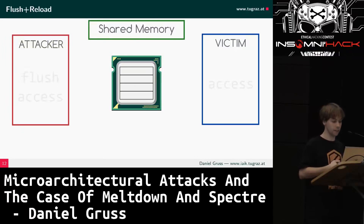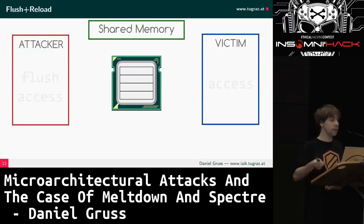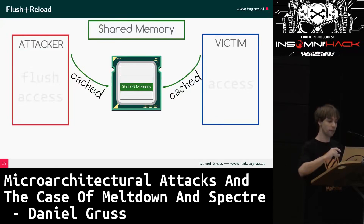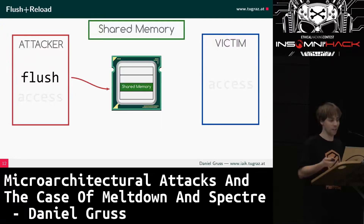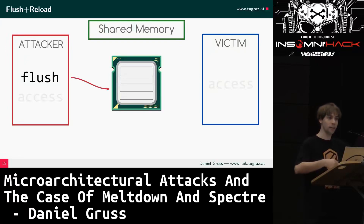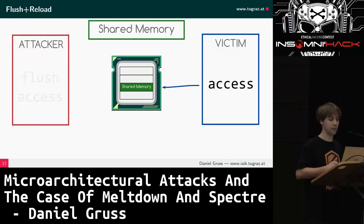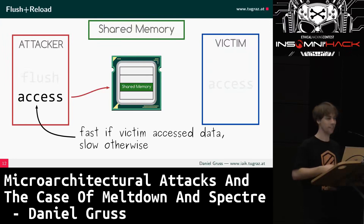Flush+Reload is an easy-to-understand cache attack discovered in 2013/2014. We assume the attacker and victim share some memory — for instance, a shared library. If a memory location is cached for one process, it's cached for both. The attacker uses the x86 CLFLUSH instruction to flush something out of the cache, then later reloads the data and measures how long it takes. If the victim accessed the memory location in the meantime, it will be fast; otherwise, slow.